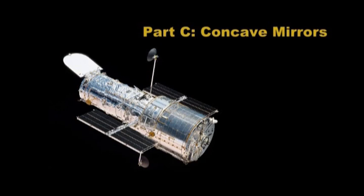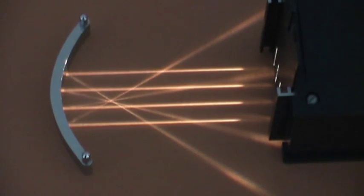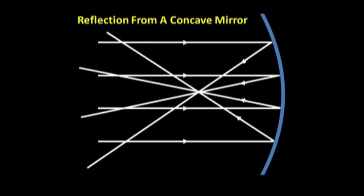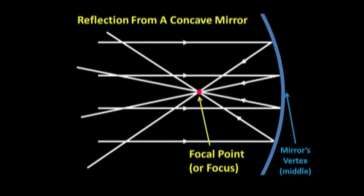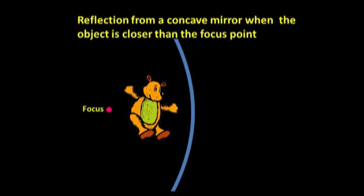In Part C, we explore the operation and uses of concave mirrors. Once again, we use real-life examples and excellent ray diagrams to give students a thorough understanding of how concave mirrors produce images.